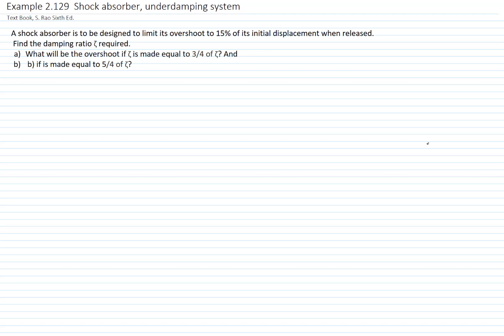We want to find the overshoot if we reduce that damping ratio to three-fourths, and we also want to calculate the overshoot if we increase our damping ratio to five-fourths. The overshoot is the displacement before it rebounds — it will be the amplitude at a half cycle. We want that amplitude to be 15% of the initial displacement or the initial condition of the system.